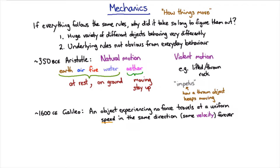If something has the same speed in the same direction, that means it has the same velocity. Velocity is the vector that has the speed and the direction of that speed. That's a nice statement of Galileo's discovery.